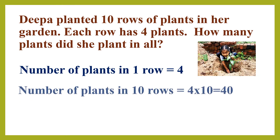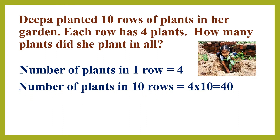Next step: number of plants in 10 rows — 4 times 10, that means the answer is 40. So Deepa planted 40 plants in all.